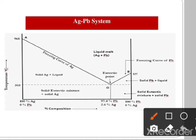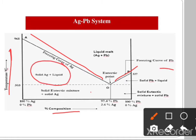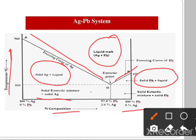The diagram shows: the freezing curve of silver (curve AO), the freezing curve of lead (curve BO), the temperature axis, and the composition axis. The eutectic solid mixture region is labeled. The area of solid silver and liquid, and the area of solid lead and liquid are also shown. The liquid region represents silver and lead in liquid state. Point A shows 100% silver and 0% lead; point B shows 100% lead and 0% silver. This is the silver-lead phase diagram.